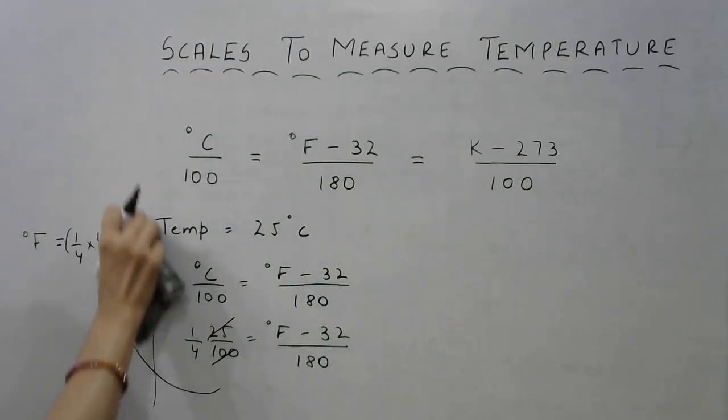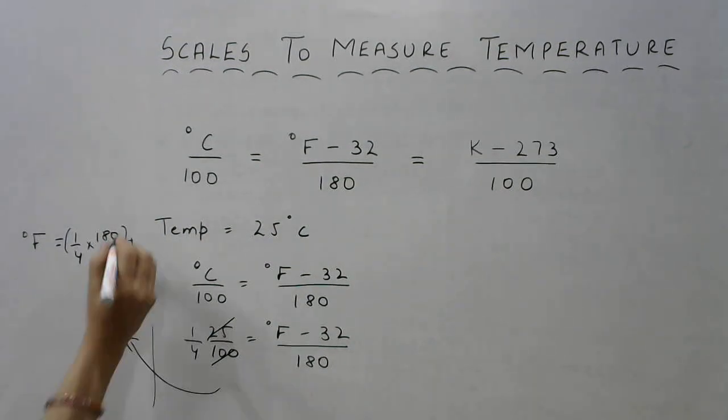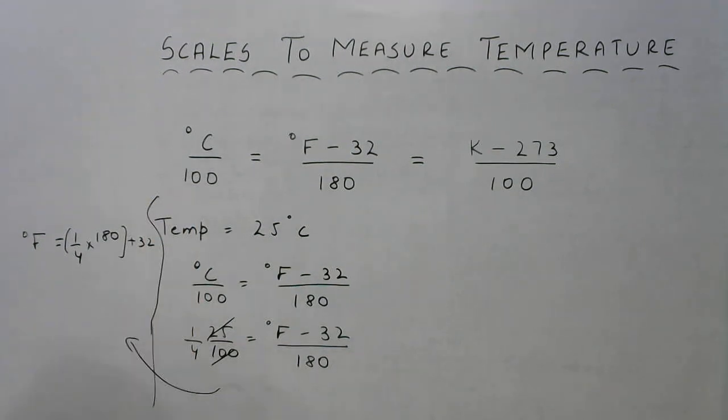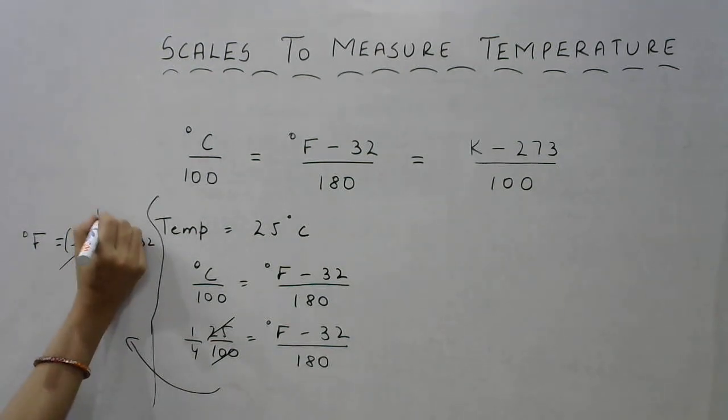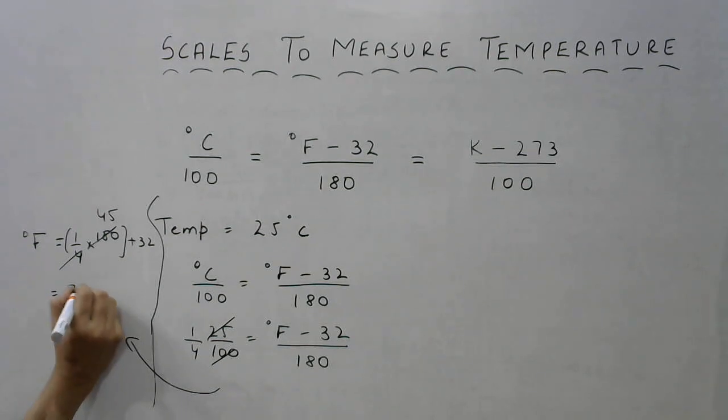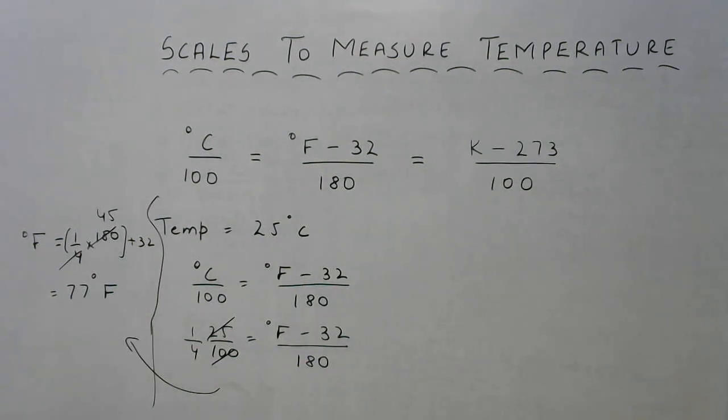Let me do this a bit more. So this again cancels out. What do you get? 4, 4 times is 16 and 4, 5 times is 20. So this becomes 45 plus 32. So this becomes 77 degrees Fahrenheit. So this is how you convert degrees Celsius to Fahrenheit.